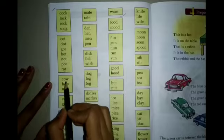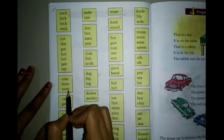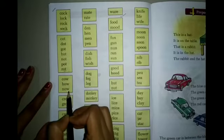C-O-W Cow, H-O-W How, N-O-W Now. OW is the same ending of these words.